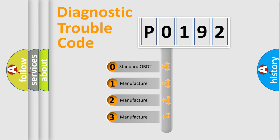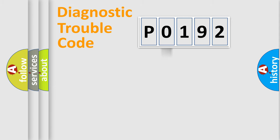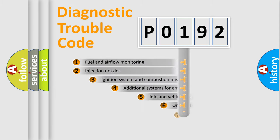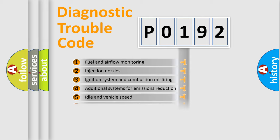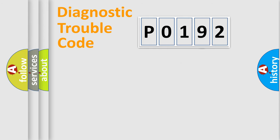If the second character is expressed as zero, it is a standardized error. In the case of numbers 1, 2, or 3, it is a manufacturer-specific error. The third character specifies a subset of errors. The distribution shown is valid only for the standardized DTC code.